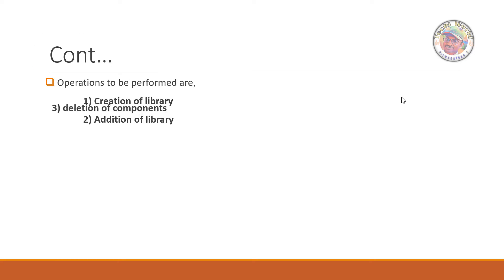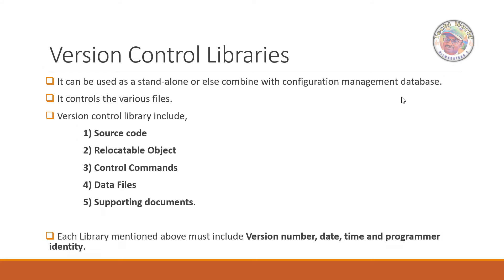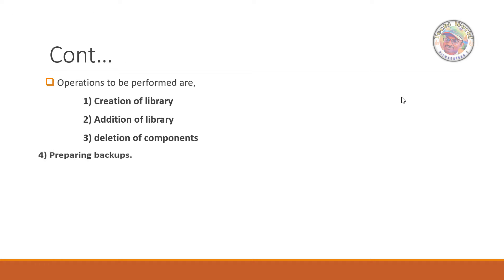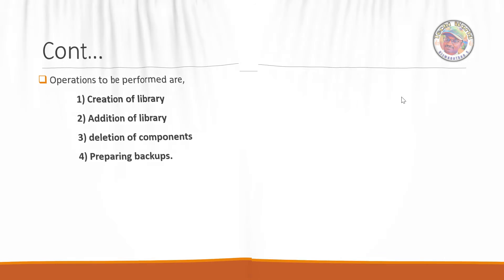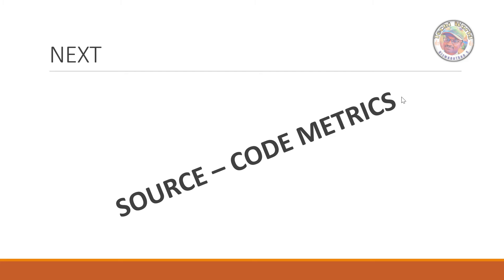Next, how do operations perform in version control libraries? First is creation of a library — if you want to create a library, you can create and add a library. Each creation is a unique library. Next is deletion of components — if you want to delete components, you can delete them and do backups: source backup, coding backup, database backup, etc. This is how operations are performed in configuration management.